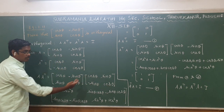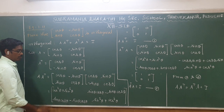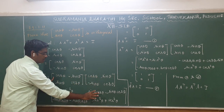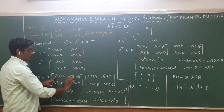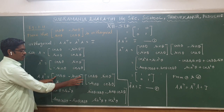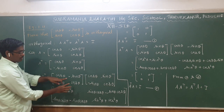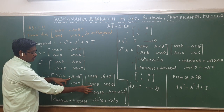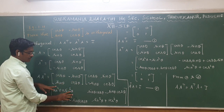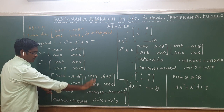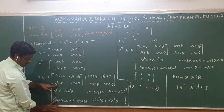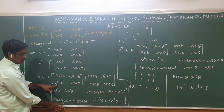Now multiply A by Aᵀ. For the (1,1) element, the first row of A times the first column of Aᵀ gives: cos θ × cos θ = cos²θ, then minus sin θ × (minus sin θ) = plus sin²θ. For the (2,1) element: sin θ × cos θ, then plus cos θ × sin θ gives sin θ cos θ.